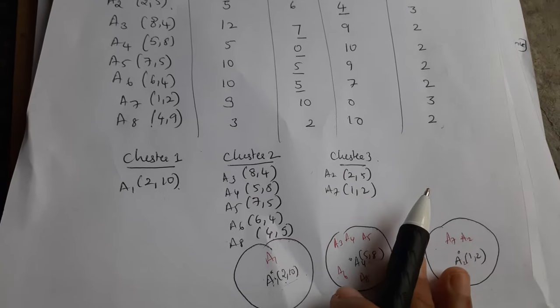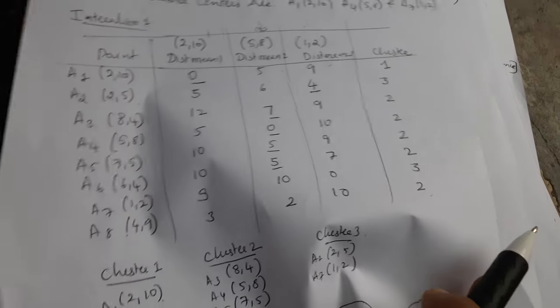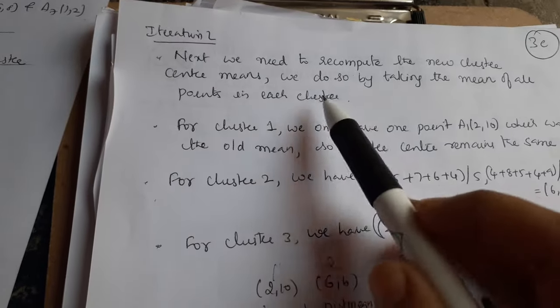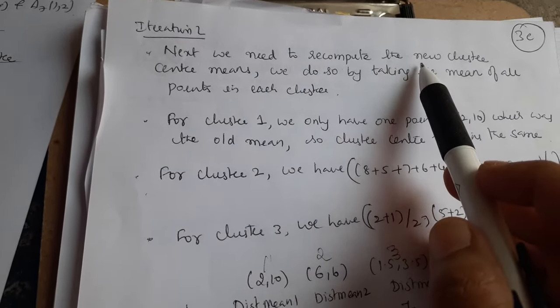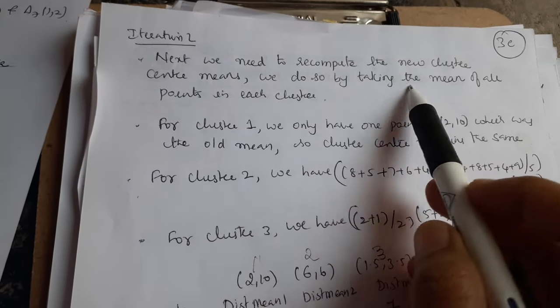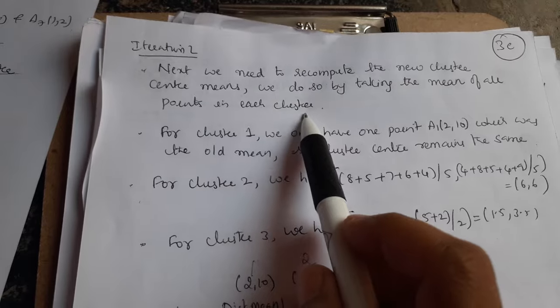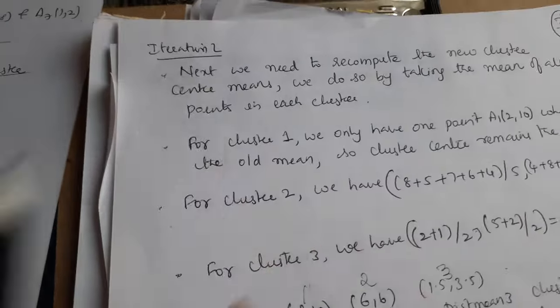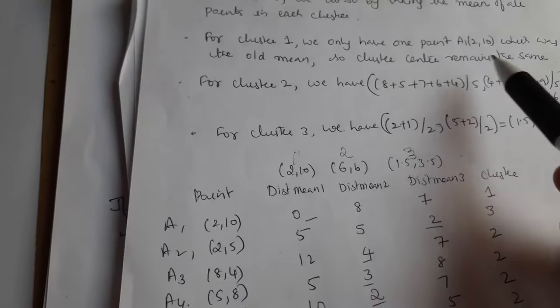The next iteration requires us to recalculate the cluster center — also called the mean or centroid. We recalculate the mean by taking the average of all the data points within each cluster. For cluster 1, there is only one data point, A1, so the mean does not change.